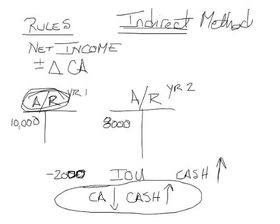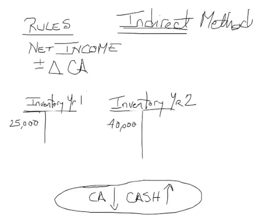Let's try a different current asset and see if the rule still sticks. We have inventory in year one of $25,000 and inventory in year two of $40,000. We have a current asset that went up by $15,000. What did it take to buy that inventory? We had to buy it with cash. So did our cash go up or down? We basically swapped cash for inventory — our inventory went up, our cash goes down. Our current assets went up, so our cash goes down. It's essentially the same rule, just in reverse: assets and cash move in opposite directions.